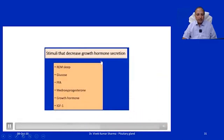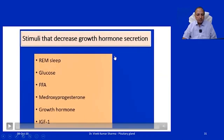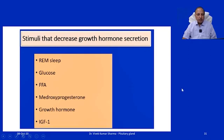Factors that cause a decrease in growth hormone secretion include: excess growth hormone or IGF-1, which decreases its own synthesis and release via negative feedback inhibition; REM sleep; glucose; free fatty acids; and progesterone.